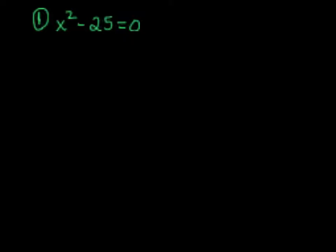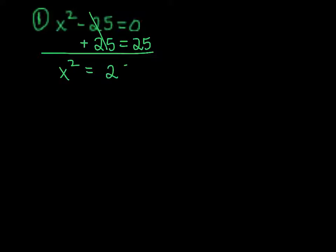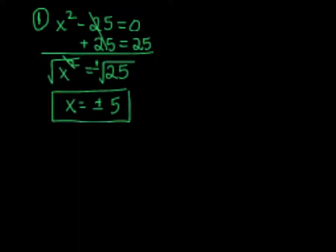So remember if we're trying to solve for x, we try to get x by itself. As it shows in your packet already, you just add 25 to both sides, and when you do that, you get x squared equals 25. Now remember, to get rid of a square term, we take the square root of both sides. When you take a square root, we need a plus or minus. The square and the square root cancel each other out, so we get x equals plus or minus 5.